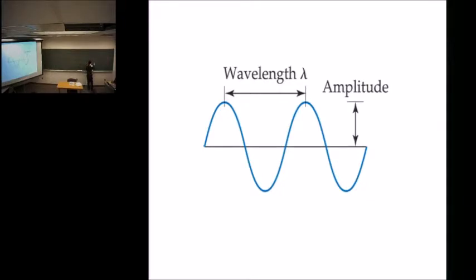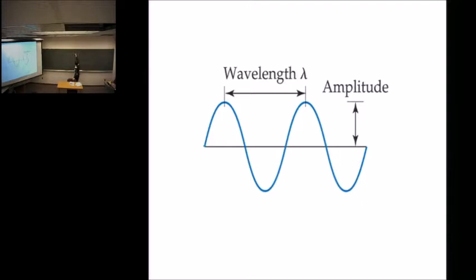Have you heard the term hertz — like a megahertz radio station? They're telling you the frequency at which they're broadcasting, because radio waves are also another form of electromagnetic radiation. Now these waves travel at a speed — that speed is a constant, and we give that the letter c. That's called the speed of light. All types of electromagnetic radiation travel at that same speed, whether it's a microwave, infrared, or radio wave. That speed is three times ten to the eighth meters per second.